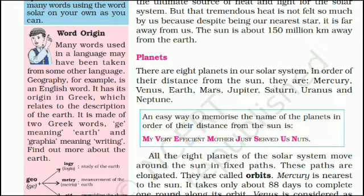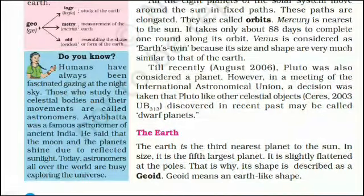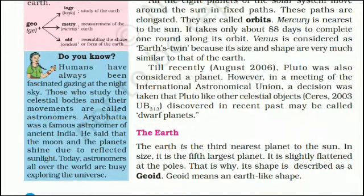Mercury is nearest to the sun. It takes only about 88 days to complete one round along its orbit. Venus is considered Earth's twin because its size and shape are very similar to that of the Earth. Till recently — up to August 2006 — Pluto was also considered a planet. However, in a meeting of the International Astronomical Union, a decision was taken that Pluto, like other celestial objects such as Ceres and 2003 UB313 discovered in the recent past, may be called dwarf planets.